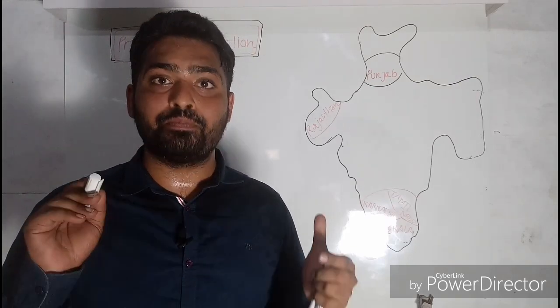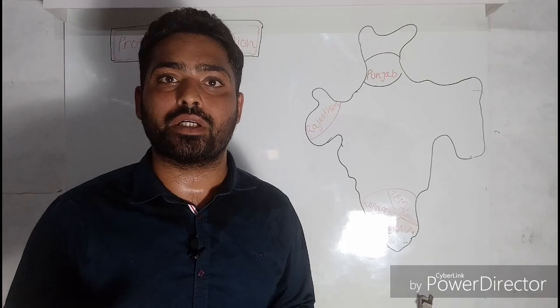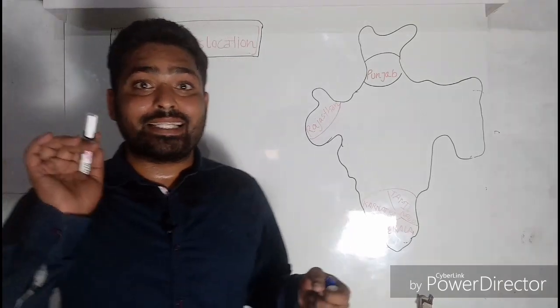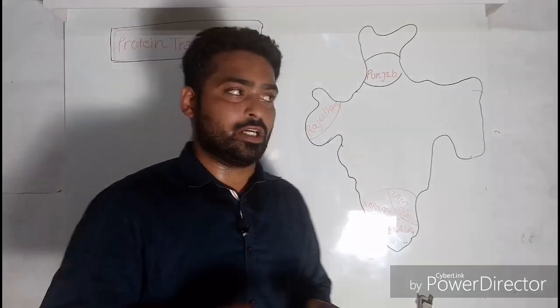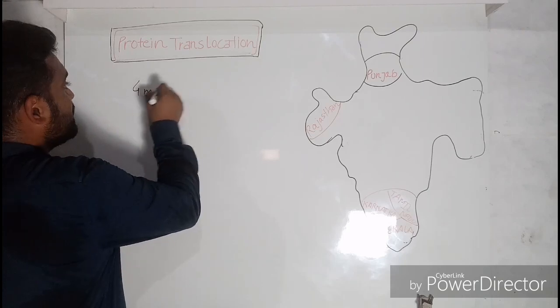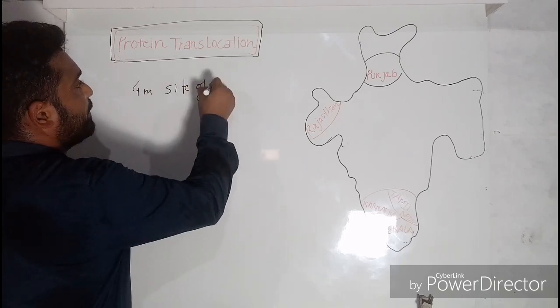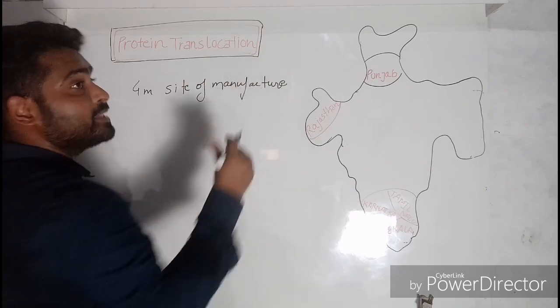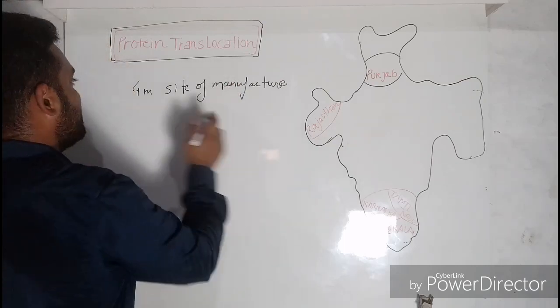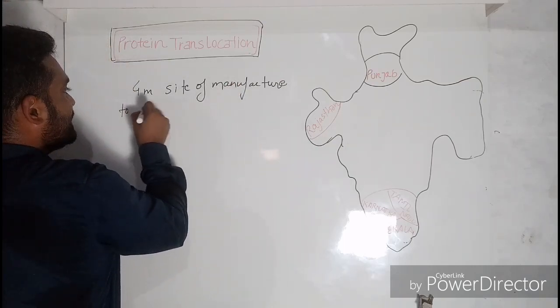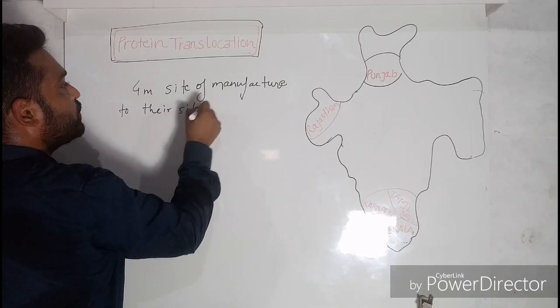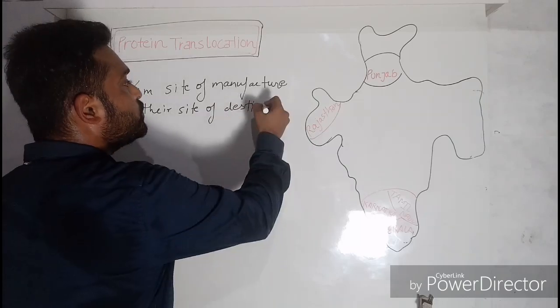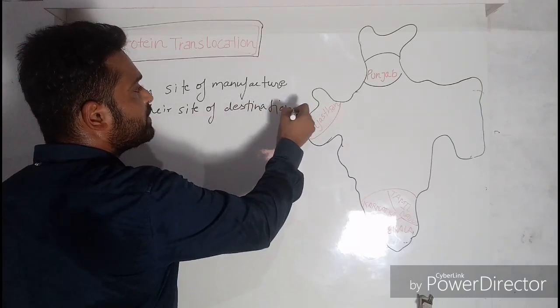in which the proteins, the cellular proteins, are transported or moved from the site of their manufacture. Listen to this statement: from site of manufacture. That means the proteins are synthesized somewhere and they are moved from that place to their site of destination, where they are destined to reach.